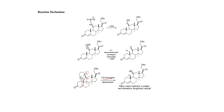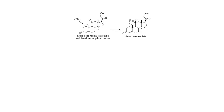As a result of this abstraction, the bond between carbon and hydrogen is also cleaved homolytically, and as a result, a carbon radical is produced. In the next step, the nitric oxide radical produced in the second step reacts with this carbon radical, and as a result, a nitroso intermediate is produced.